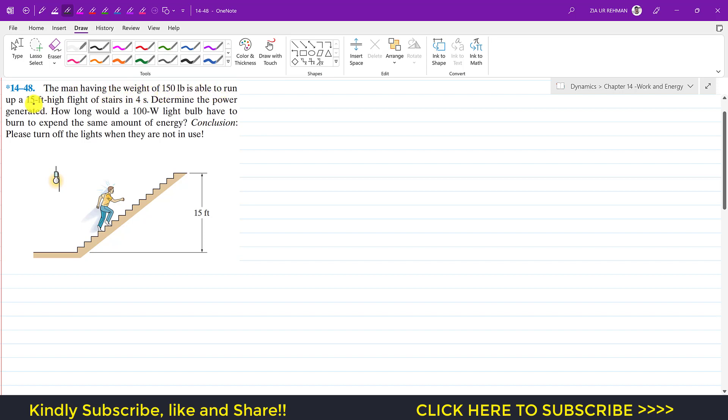...is able to run up a 15 feet high flight of stairs in four seconds. Determine the power generated and how long would a 100 watt light bulb have to burn to expend the same amount of energy.